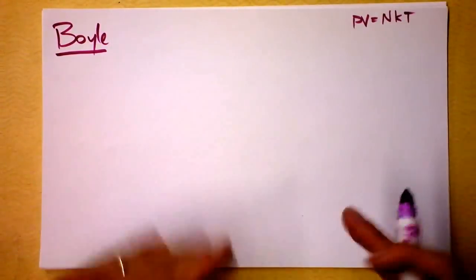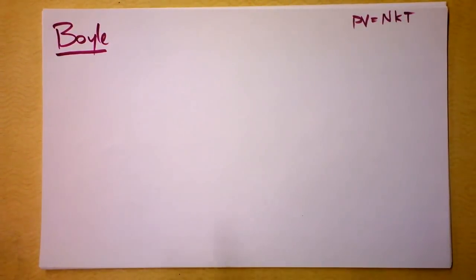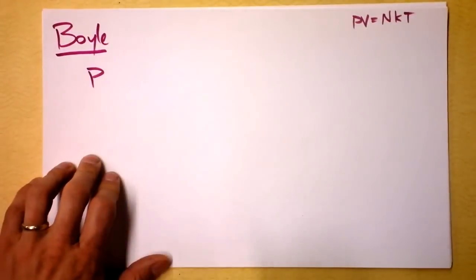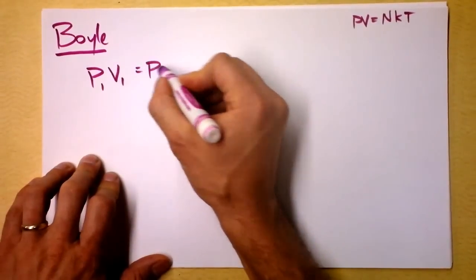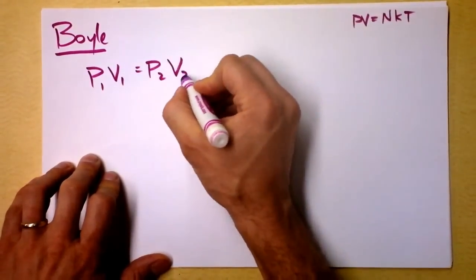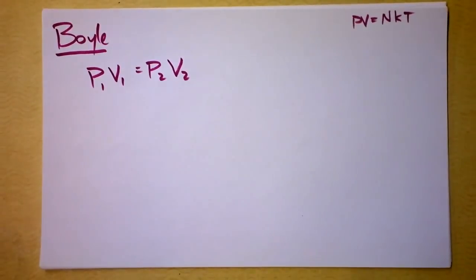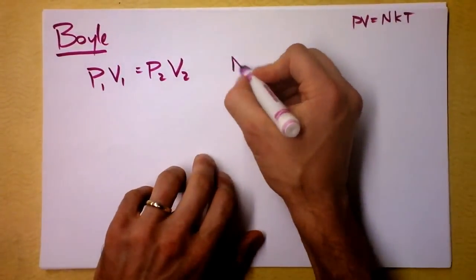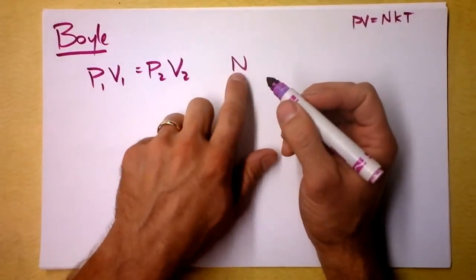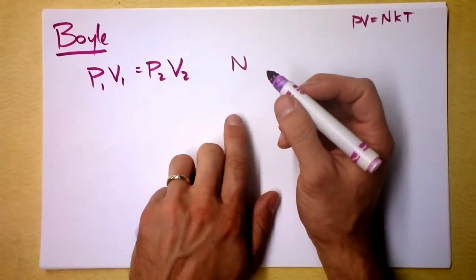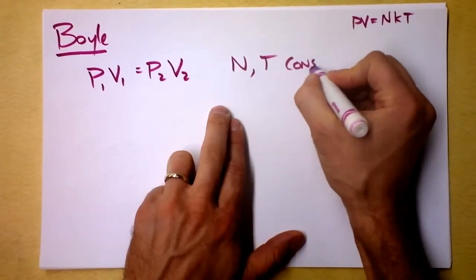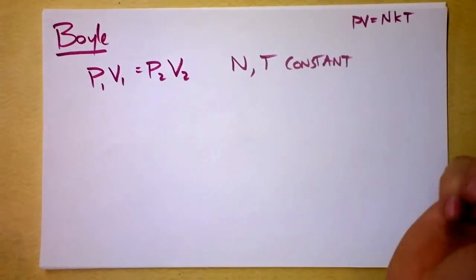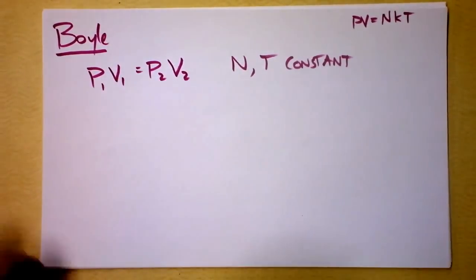But a long time ago, Boyle was doing some experiments in the 1600s, and he found that pressure one times volume one was equal to pressure two times volume two, as long as he didn't do anything to the number of particles in there, and as long as he didn't do anything to the temperature. So if you keep those things constant, Mr. Boyle, you will find that this relationship holds true.